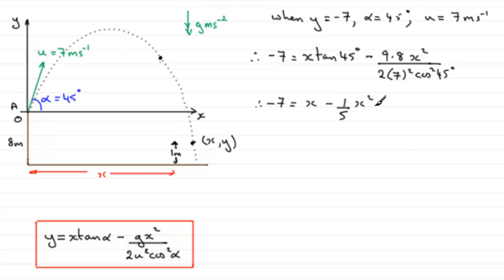Now we've got essentially a quadratic equation here, so we need to rearrange it, make it equal to 0. And I'd want to get rid of this 5, so I'm going to multiply throughout by 5, and so I'm going to get minus 35 there equals 5X minus X squared. And if I rearrange this, it follows that I'm going to have X squared minus 5X minus 35 equals 0.